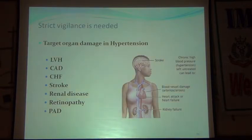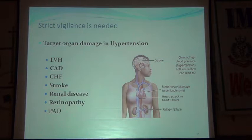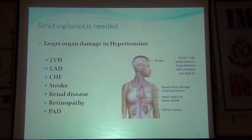Target organ damage from hypertension: in the brain — stroke, intracerebral hemorrhage, or hypertensive encephalopathy; in the eyes — hypertensive retinopathy and loss of vision; in the heart — hypertensive heart disease, coronary heart disease, congestive heart failure; in the kidneys — renal disease; and in the peripheral vasculature.